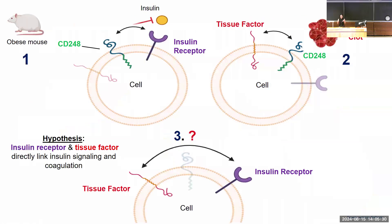Previous research at Conway lab showed that CD248 interacts with the insulin receptor, which is involved in metabolism, and causes insulin resistance, resulting in obese mice. At the same time, CD248 interacts with tissue factor, which is a major initiator of the clotting cascade, and increases its activity, resulting in more blood clots.